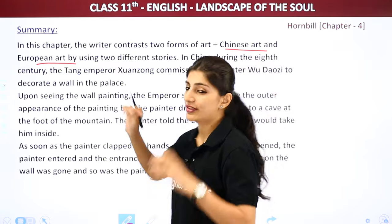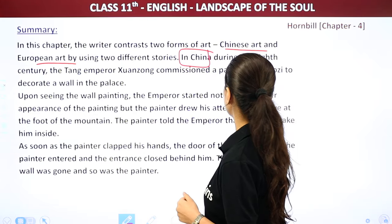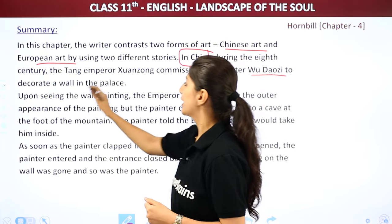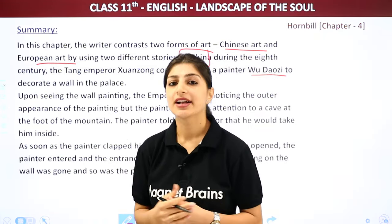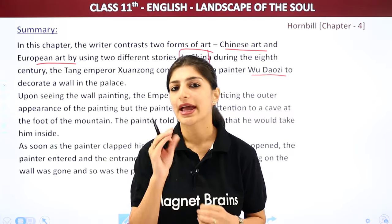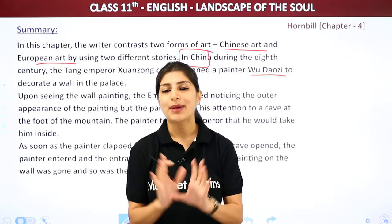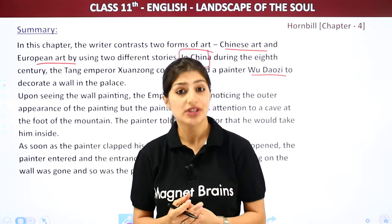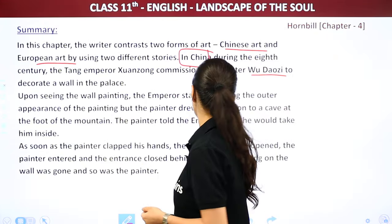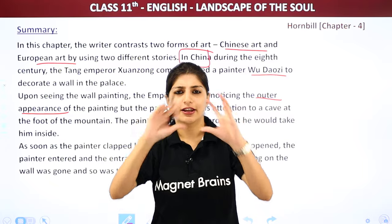In China, during the 8th century, we will understand the Chinese art form and learn a story about it. So in China, during the 8th century, the Tang Emperor Zhuangzong commissioned a painter, Wu Douzi, to decorate a wall in the palace.